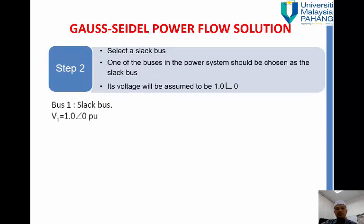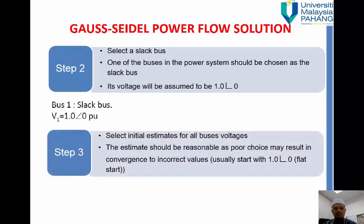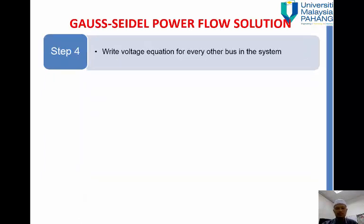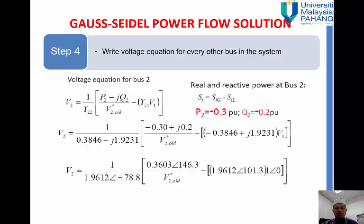Next we select the slack bus, and then normally we be given sometimes 1.0 or sometimes 1.05 so the angle normally is zero. And then step three, we just estimate the, use the estimation or the initial value initial estimation. Normally for the load bus we just use our V 1.0 and then we write our voltage equation.